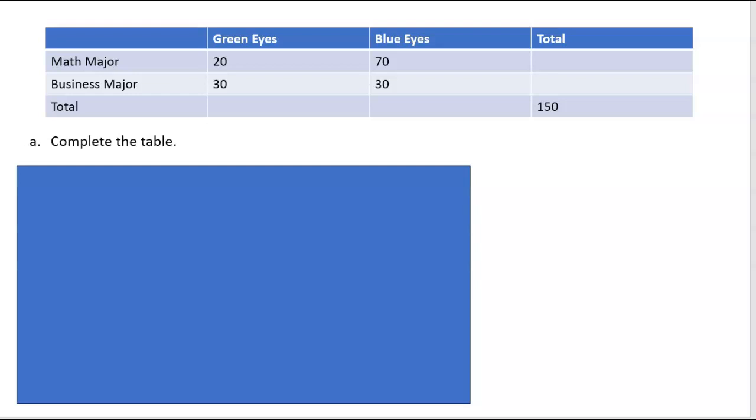You'll notice my math majors go across the first row here. So we have 20 plus 70, which is 90 math majors. Then we look at our business majors, 30 plus 30 is 60. And now if we look vertically, we will notice that 90 plus 60 is 150, and we have 50 green eyed people and 100 blue eyed people.